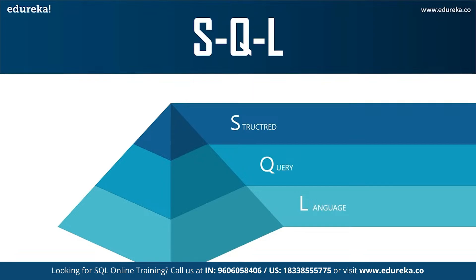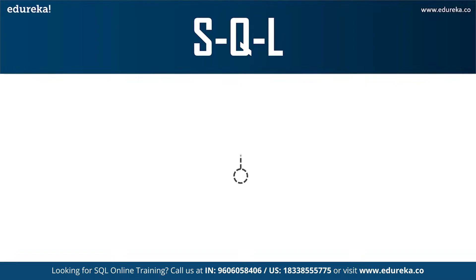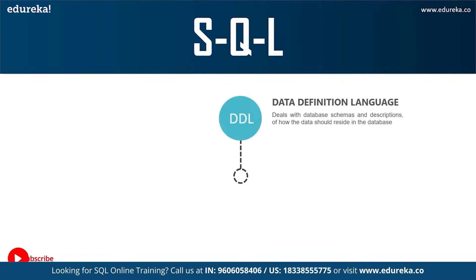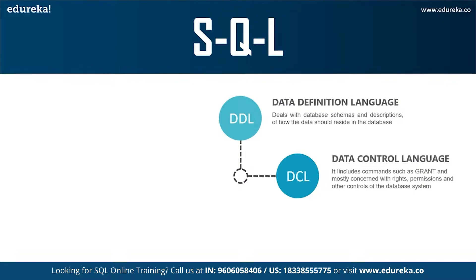SQL is a core of relational database, used for accessing and managing the database. With the help of SQL statements, you can add columns, update or delete rows of data, retrieve information, modify the database, and perform many more actions. The different subsets of SQL commands are as follows: DDL, that is Data Definition Language, which deals with the description of the database schema and is used to create and modify the structure of database objects. It allows operations such as create, alter, and delete. Moving on, DCL, that is Data Control Language, allows you to control access to the database — grant or revoke user access privileges.